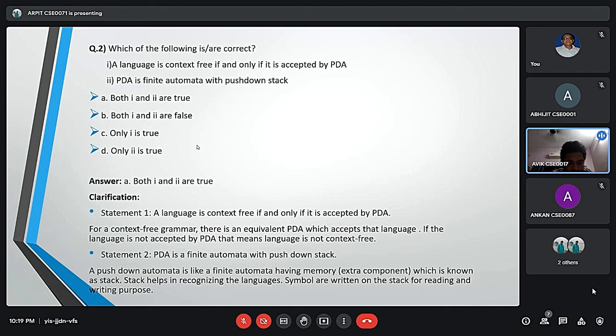Second question: Which of the following is or are correct? Statement 1: A language is context-free if and only if it is accepted by pushdown automata. Statement 2: Pushdown automata is finite automata with pushdown stack. Both one and two are true. For a context-free grammar, there is an equivalent pushdown automata which accepts the language. A pushdown automata is like a finite automata having memory which is known as stack. Stack helps in recognizing the languages.